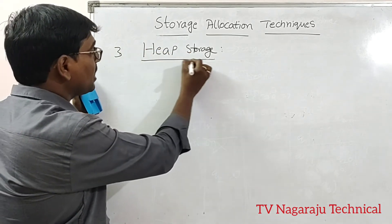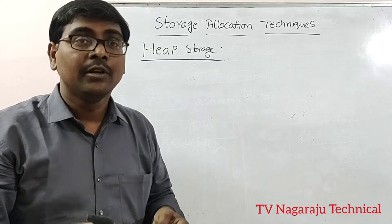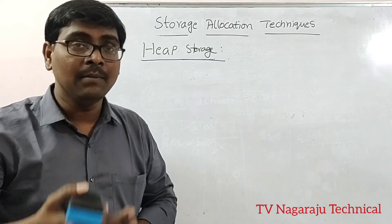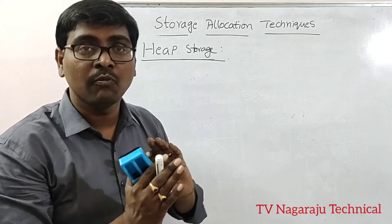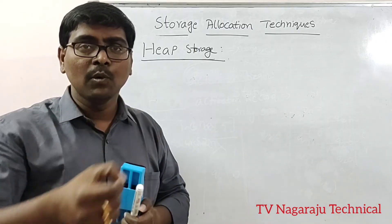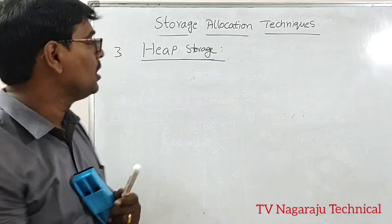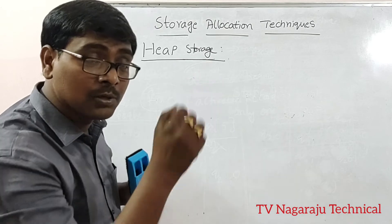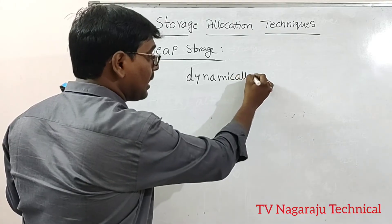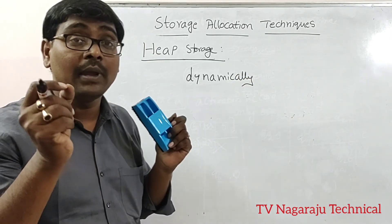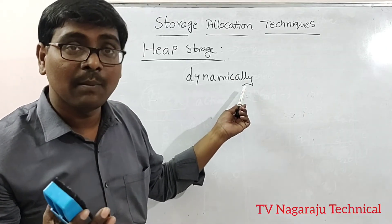The third type is heap storage allocation. Heap storage means memory is allocated to the user at any time, depending upon the requirement. If right now I need a hundred bytes of memory, it is allocated. During program execution, if I want additional memory, no problem — it can add the additional memory. Simply put, heap dynamically allocates memory.